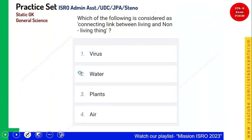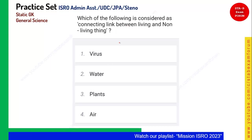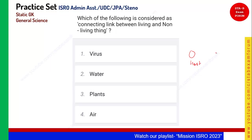Which of the following is considered the connecting link between living and non-living things? There is a host and there is an agent. When this agent comes under a host, it will survive; otherwise it will not survive. That is called a virus. A virus does not live independently — it needs a host to survive. Option 1 is the correct answer.